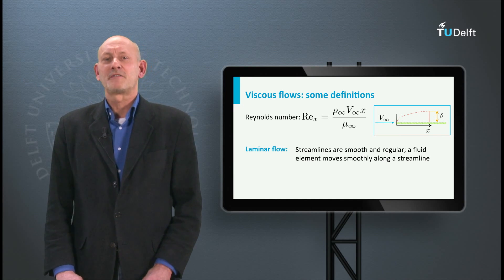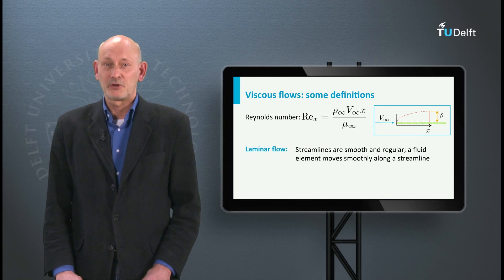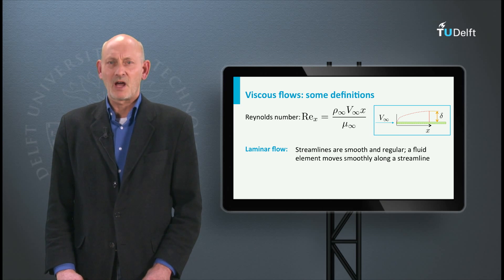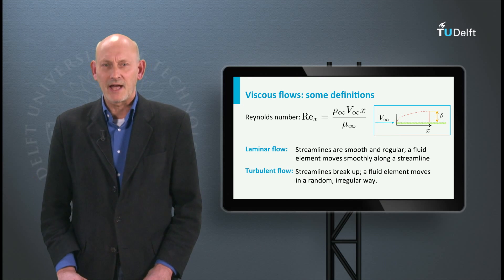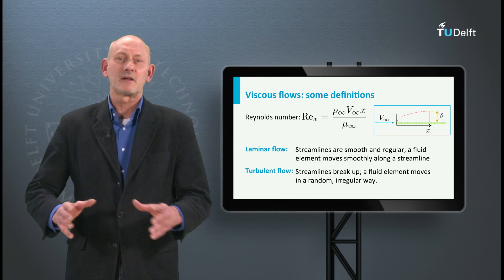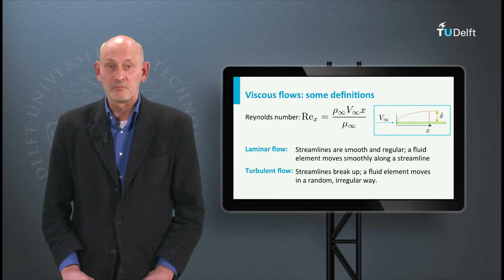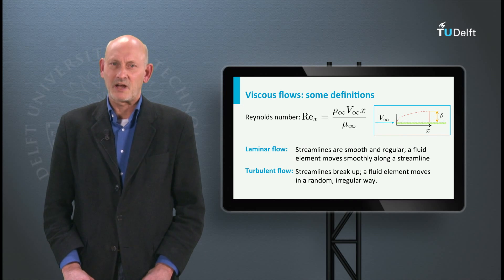When a fluid starts to flow over the flat plate it begins to form a laminar boundary layer. The streamlines are smooth and regular. The flow moves in neat layers. At some distance from the leading edge the character of the flow has changed into irregular, random and chaotic movements. This is a turbulent boundary layer.